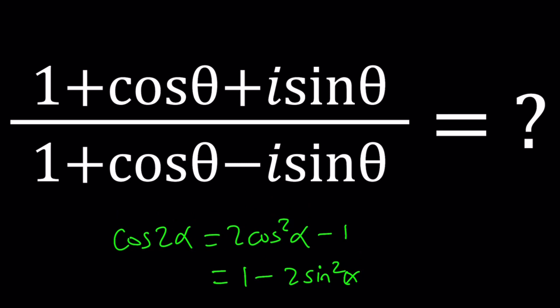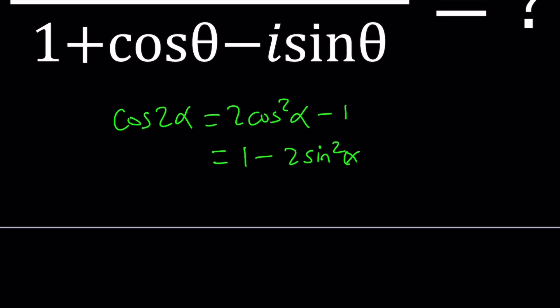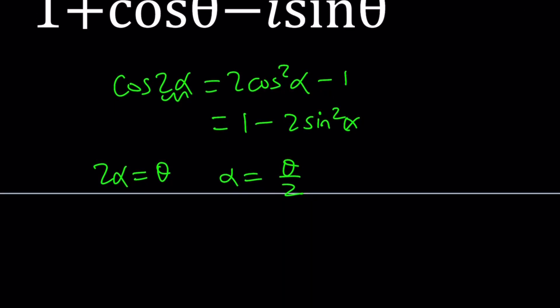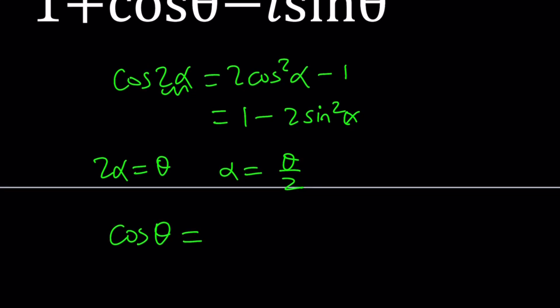We have 1 plus cosine theta, but how am I going to use it on theta? Well, easy. Set 2 alpha equal to theta, you get alpha equals theta over 2. That's what I mean by half double angle thing. So we can basically write this as cosine theta equals 2 cosine squared theta over 2 minus 1.